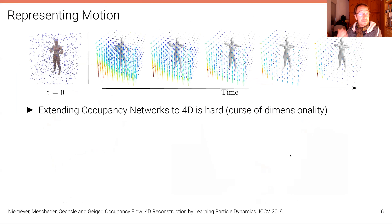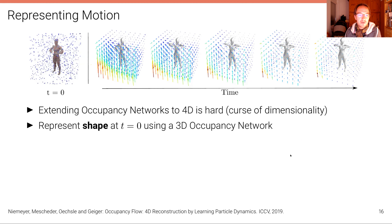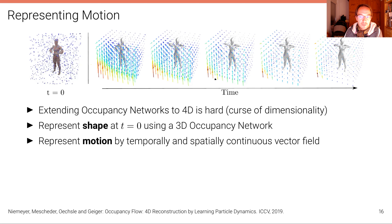Another thing we looked at is whether we can represent motion in 3D — effectively extending occupancy networks to 4D. This is quite hard due to the curse of dimensionality, and there is also very little data available. So instead, we represent the shape only at a particular point in time — say T equals zero — using a standard 3D occupancy network, and then represent the motion by a temporally and spatially continuous vector field. This 4D vector field is much smoother than the shape varying with time, so it's much easier to predict with a neural network using lower capacity and less data.